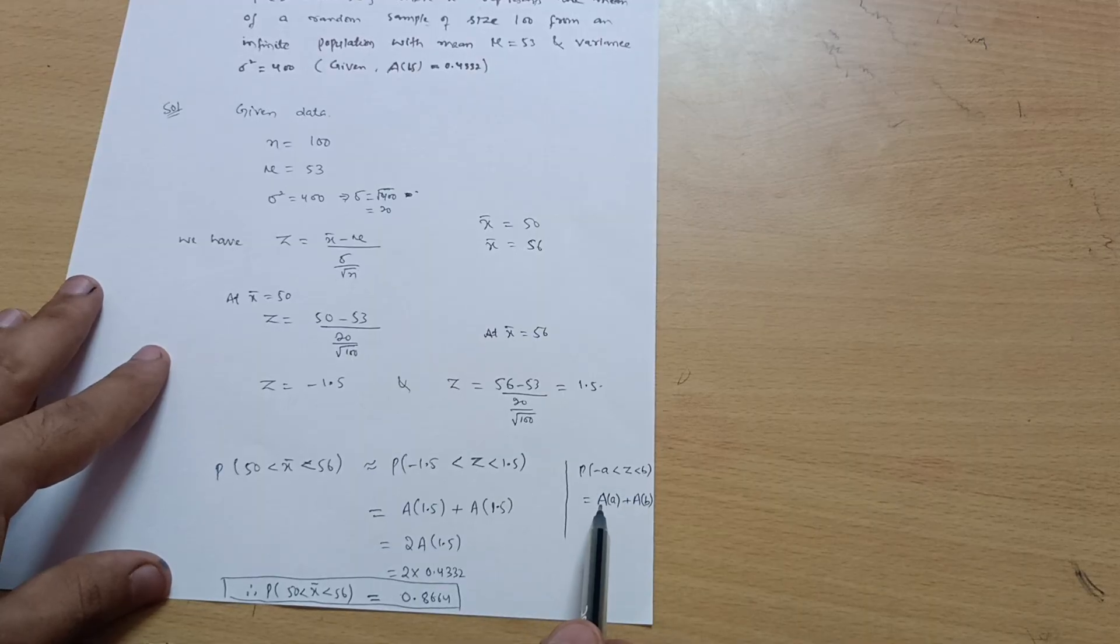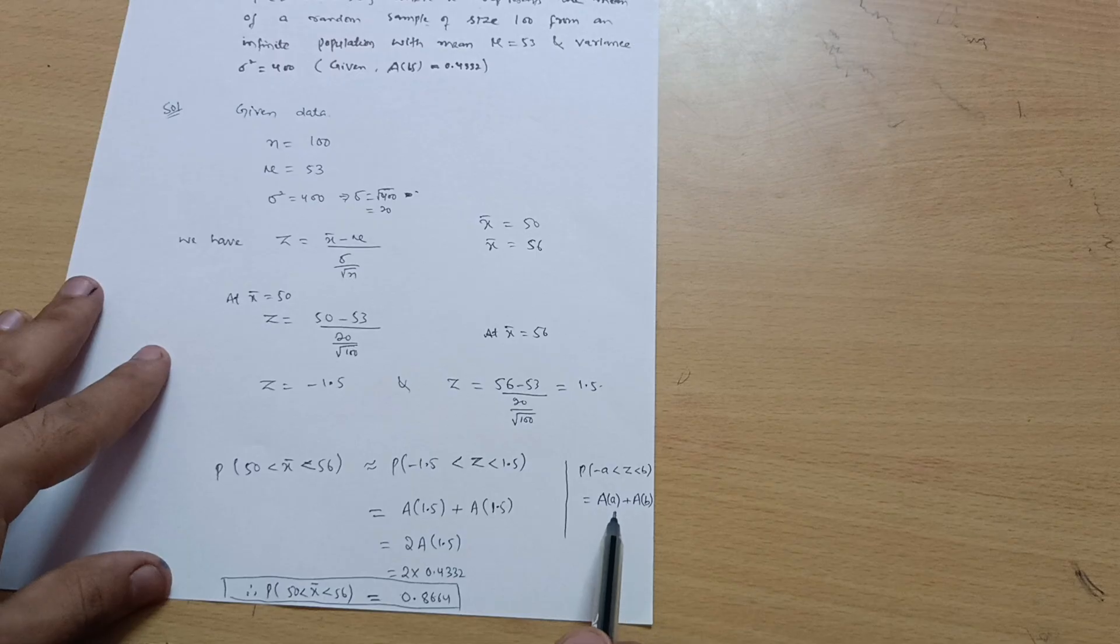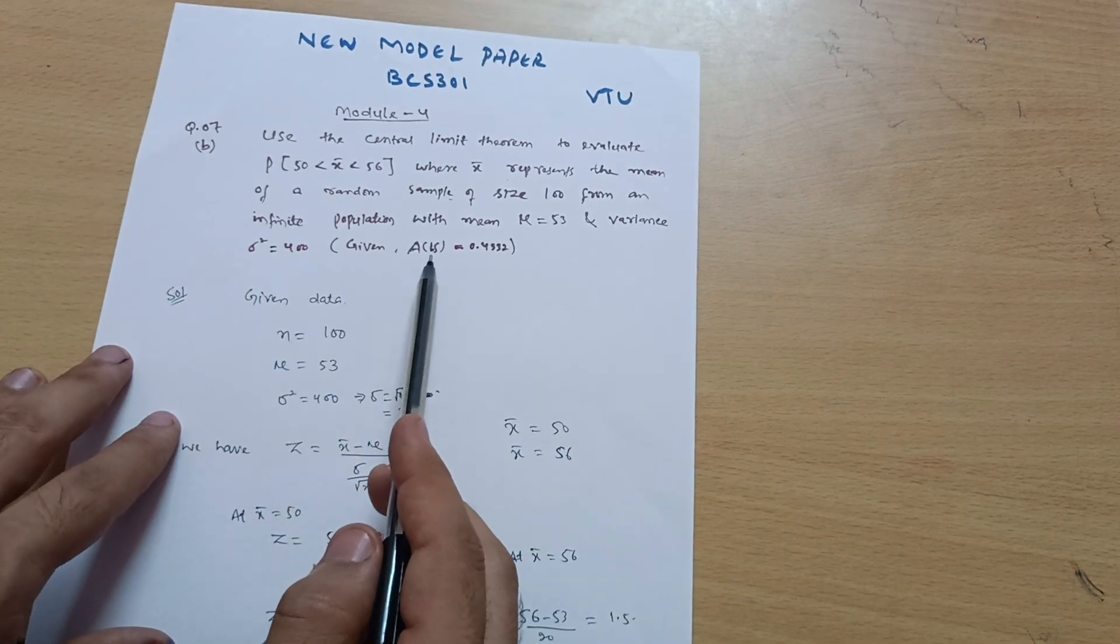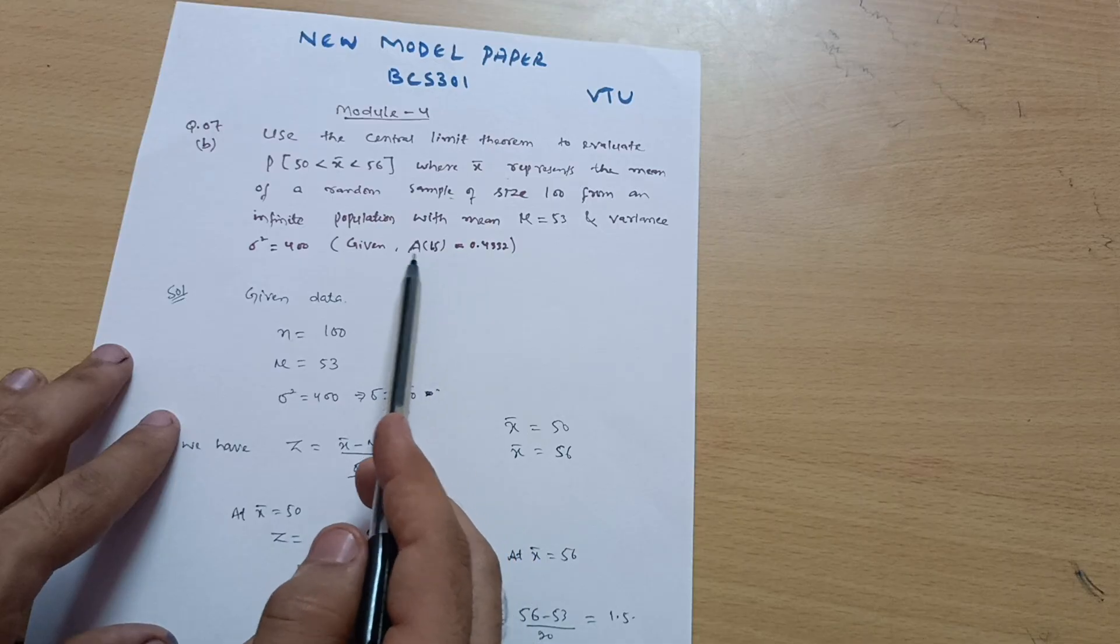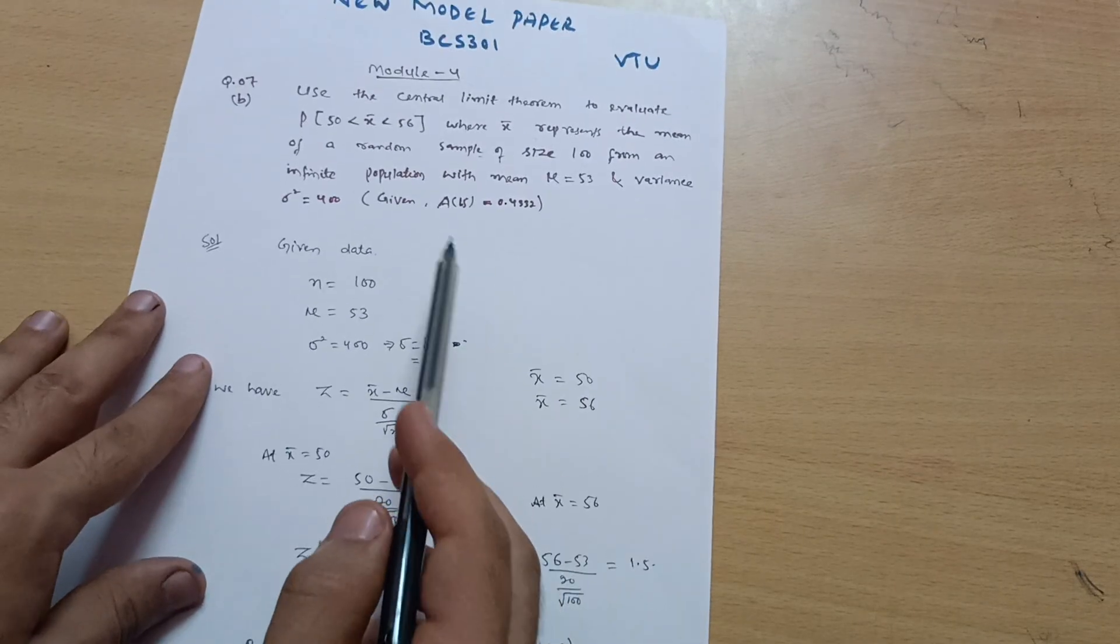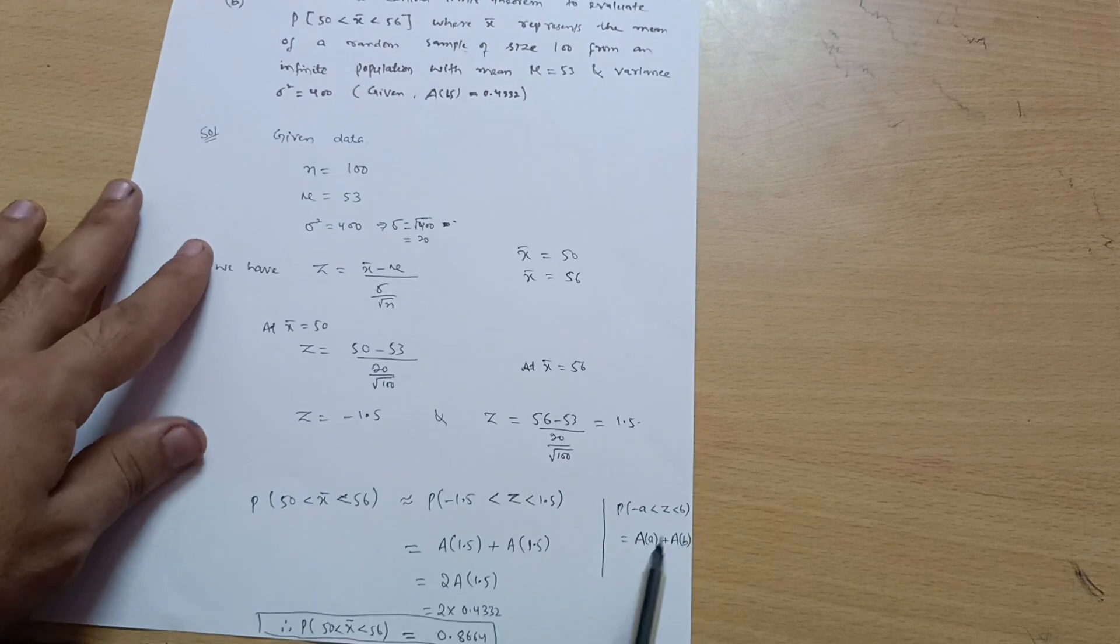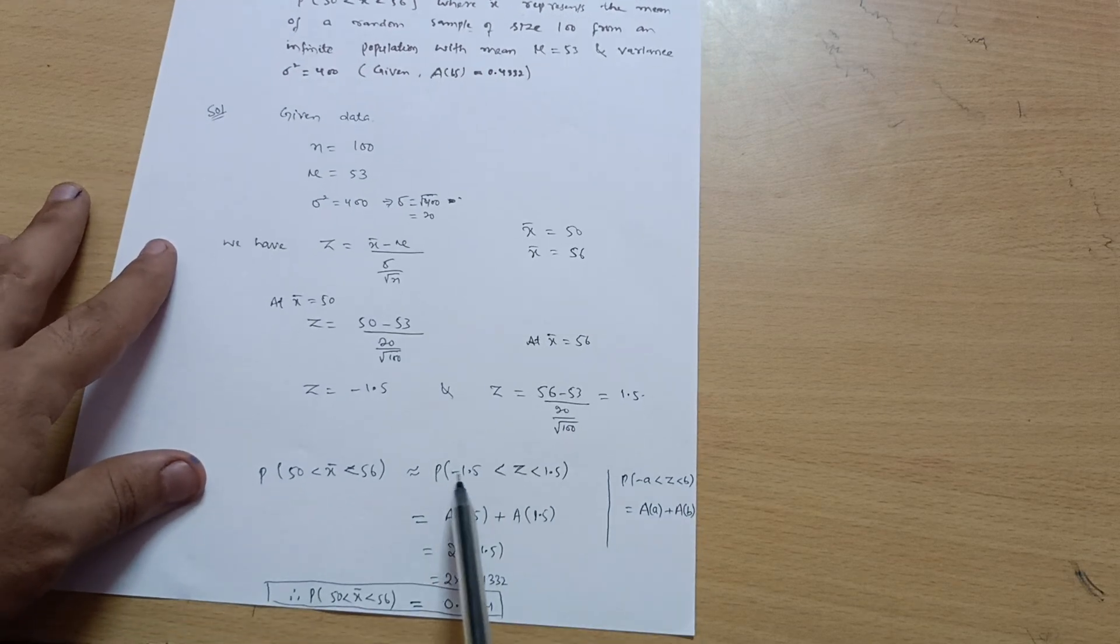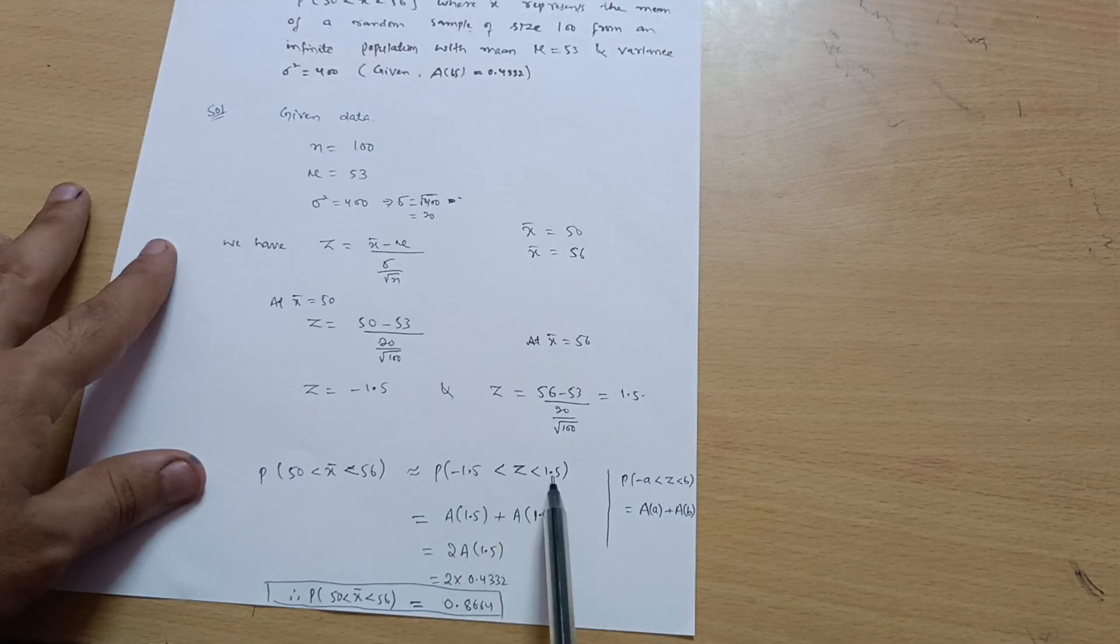Sometimes φ(a), φ(b), but in this problem A(1.5) is given in the question, so I will take A(a) + A(b). See here, this is your a (minus a), this is your b in this case.